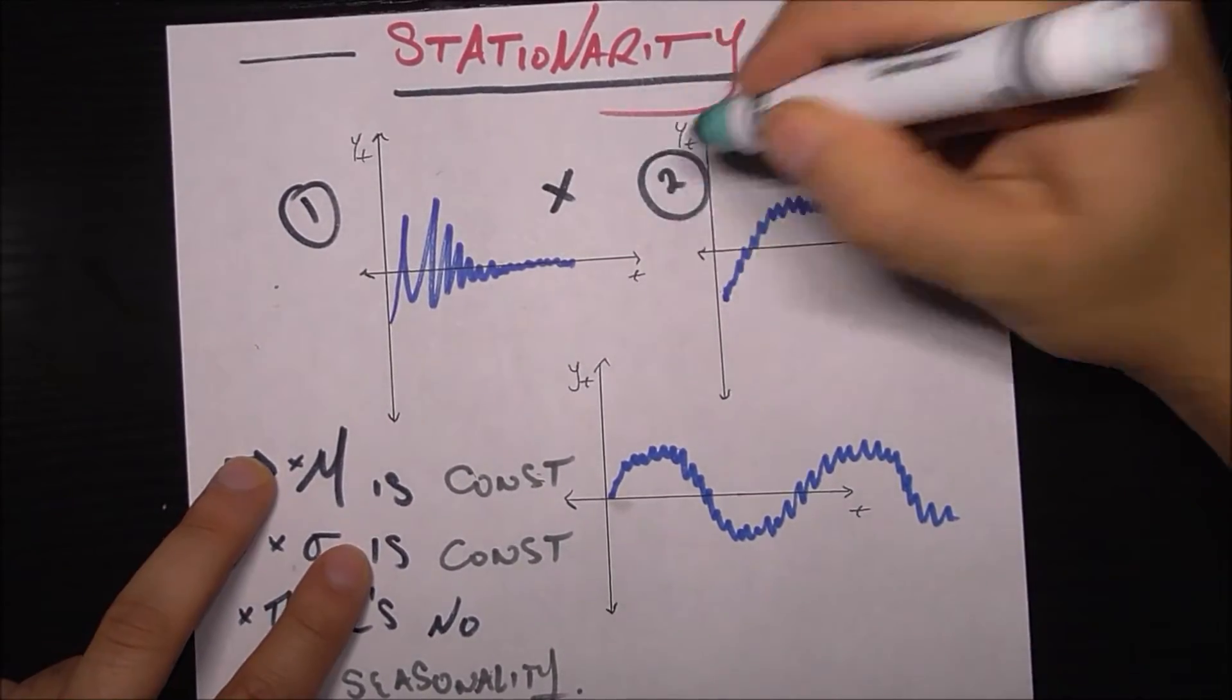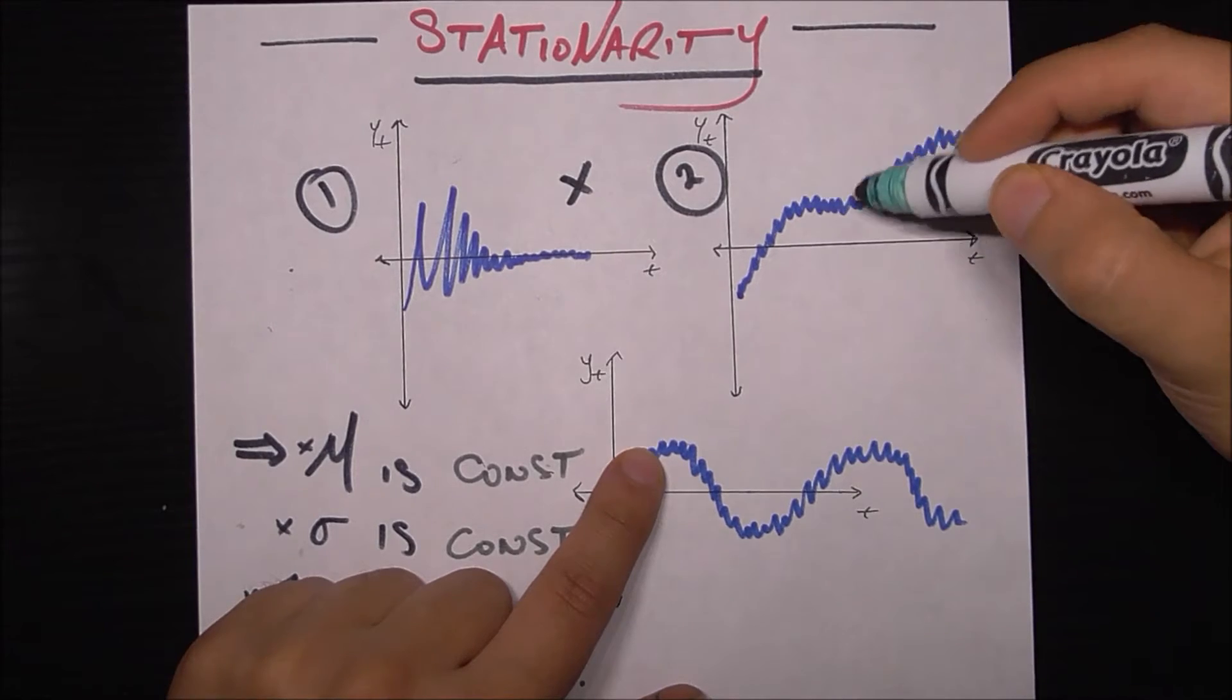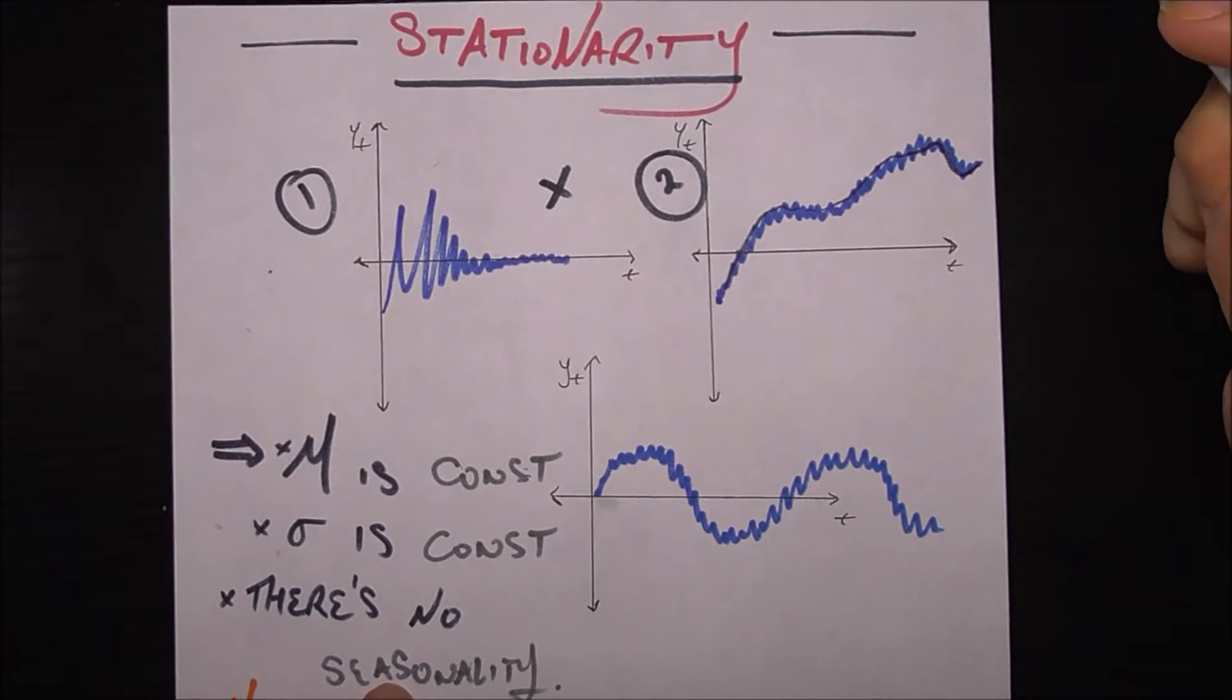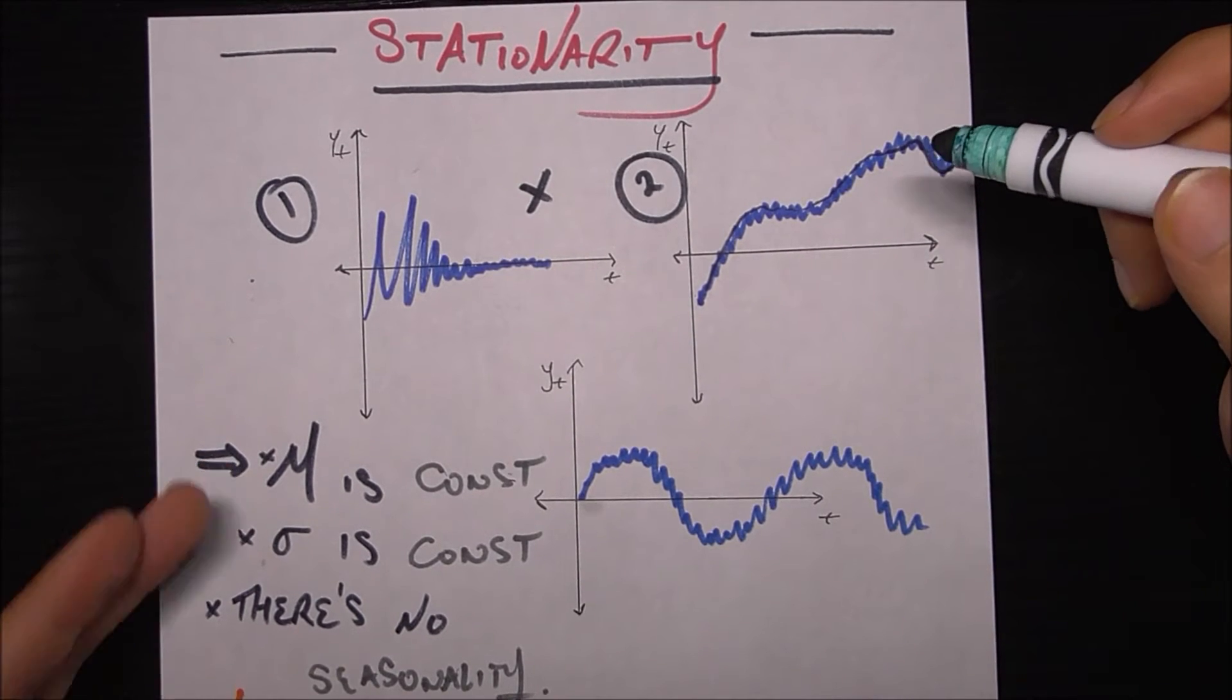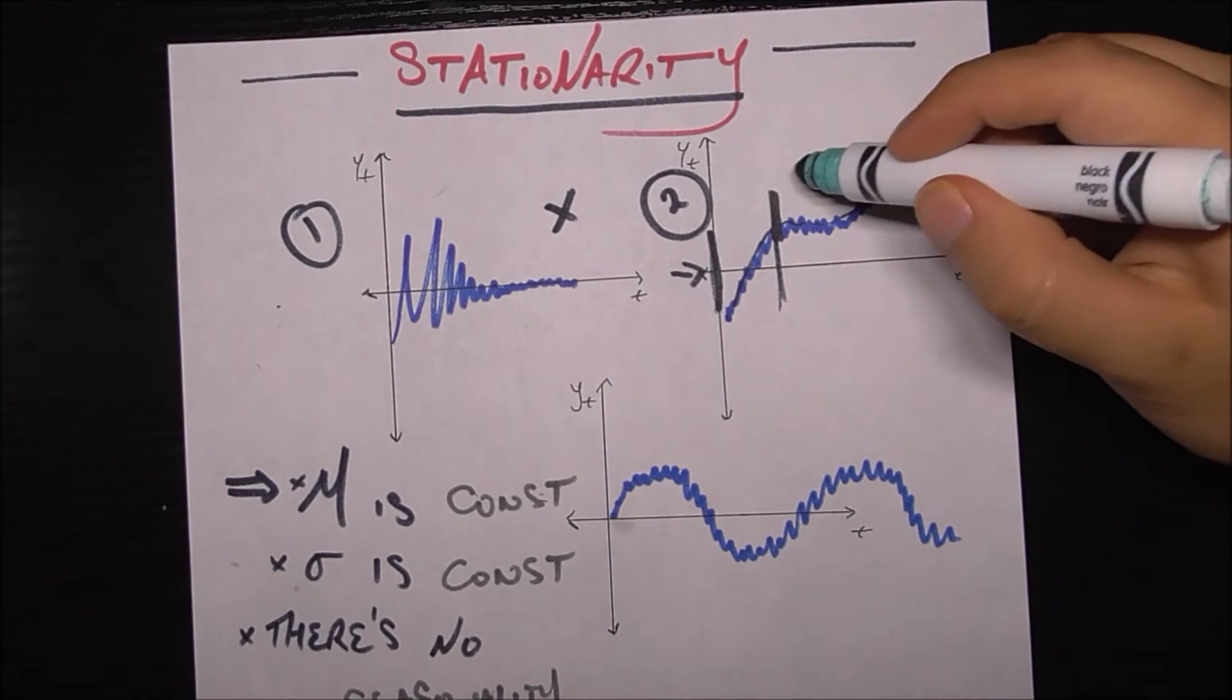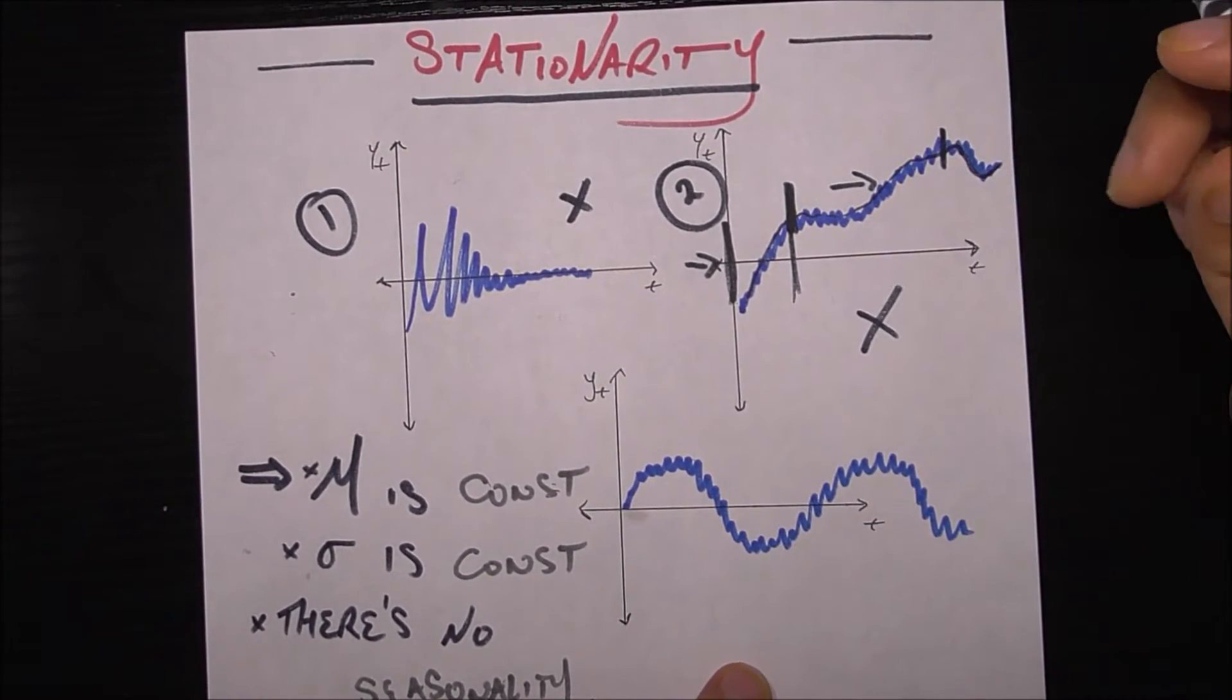Now let's look at time series number two here. The standard deviation issue is solved. We see that it's fluctuating the same amount along this trend here. There's no seasonality, we can't really say there's a periodic pattern over time. But the issue of course is that the mean is not constant. For example, if we were to look at just this time chunk here the mean would be around this black line, but if we look at the chunk from here to here, the mean has obviously shifted. So the mean is shifting over time and for that reason this is not stationary either.